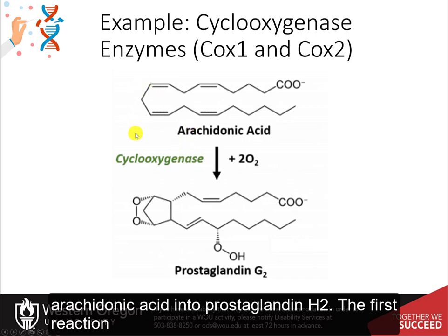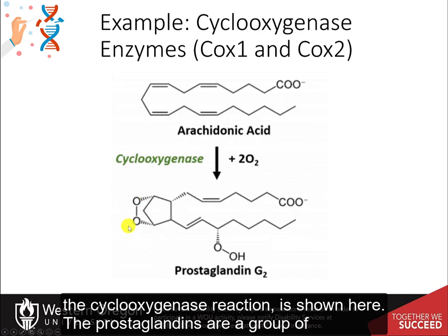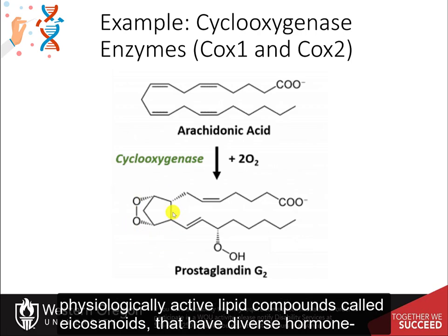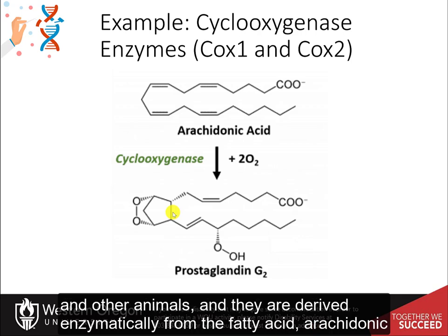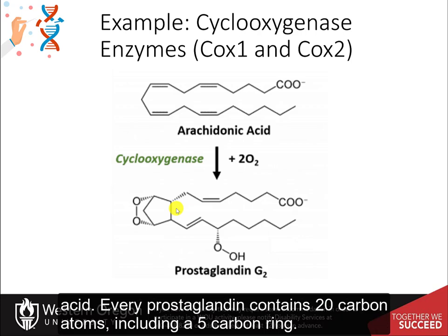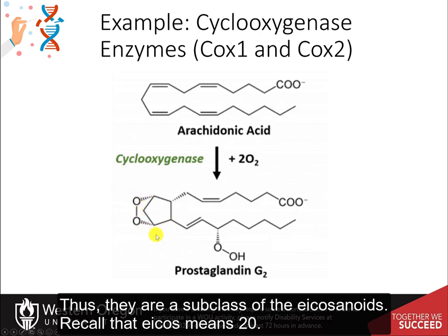The first reaction — the cyclooxygenase reaction — is shown here. The prostaglandins are a group of physiologically active lipid compounds called eicosanoids that have diverse hormone-like effects in animals. Prostaglandins have been found in almost every tissue in humans and other animals, and they are derived enzymatically from the fatty acid arachidonic acid. Every prostaglandin contains 20 carbon atoms, including a 5-carbon ring. Thus, they are a subclass of the eicosanoids.